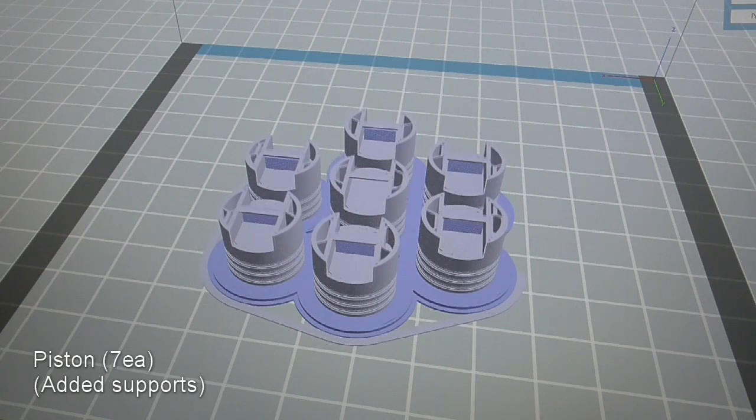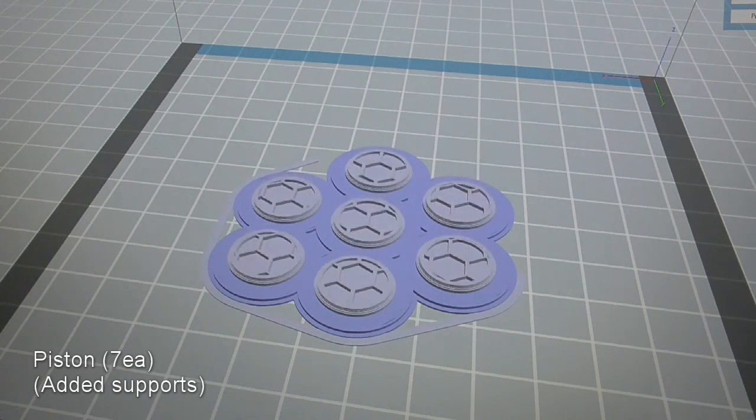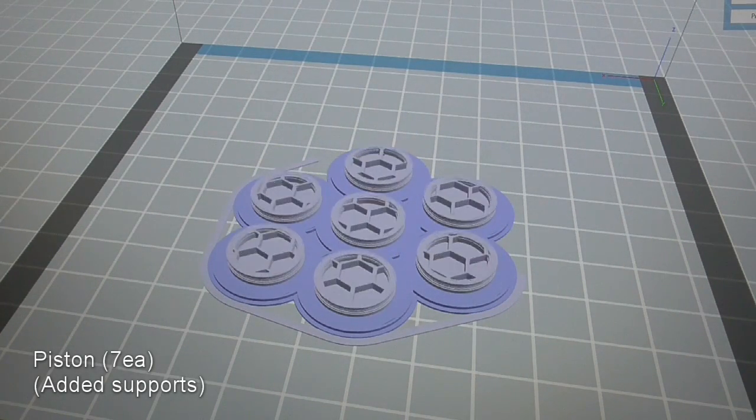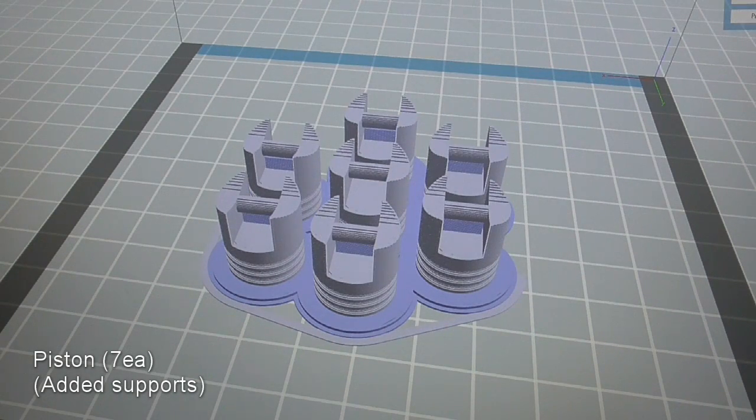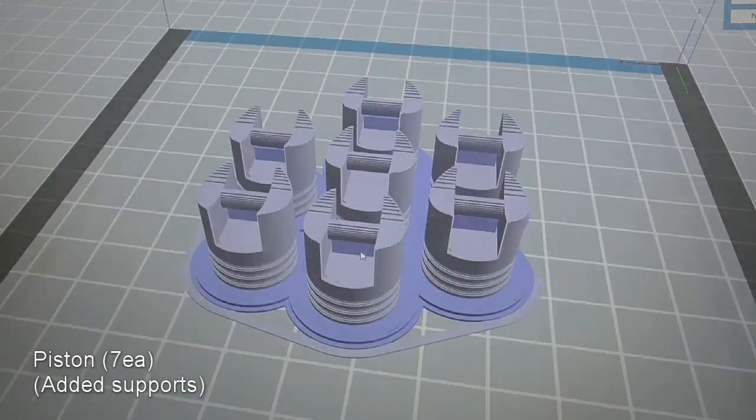Next is the pistons. This part is identical to the eight-cylinder version, but note that only seven of these is required. I added supports for the floating links for the connecting rods.